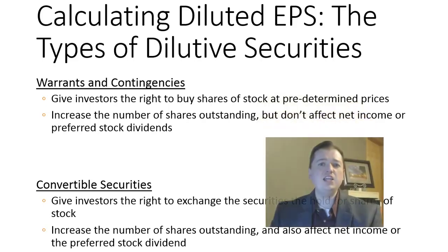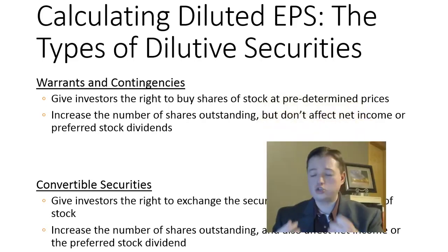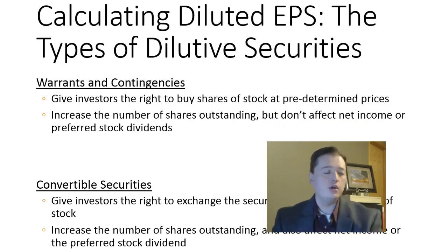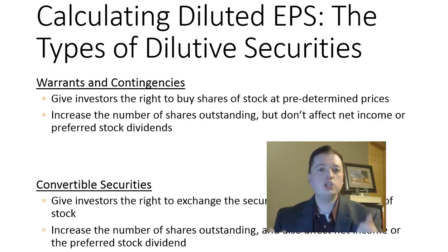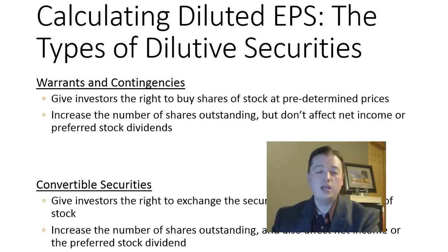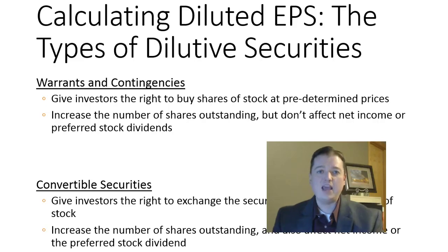A dilutive security is any security I have sold to investors, given to employees, or given out as bonuses to go along with trade agreements or to satisfy accounts payable or other obligations — that allow another investor or individual to purchase shares of my stock from me. This does not mean the right to buy shares from people who already have them in the market; it's the right to get shares from the company. That's a dilutive security, and they come in a couple of different packages.